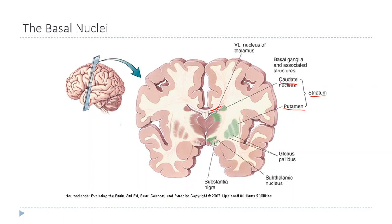Just medial to the putamen is the globus pallidus, which also has two parts that go together. The name globus pallidus literally means pale globe, referring to the shape and color of the structure under certain dissections. It is also part of the basal nuclei.